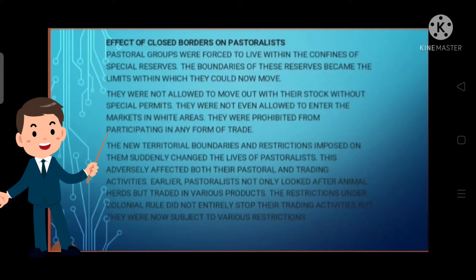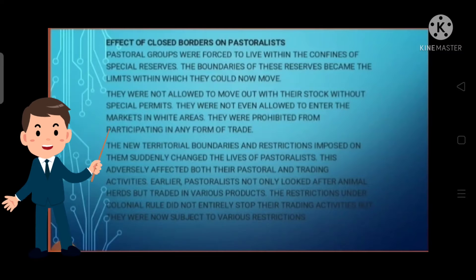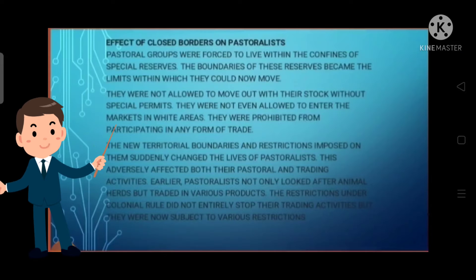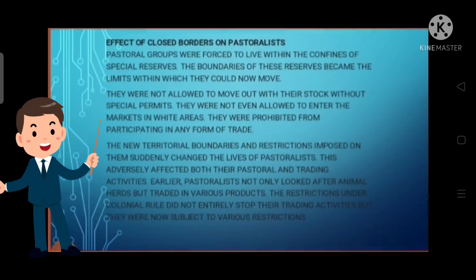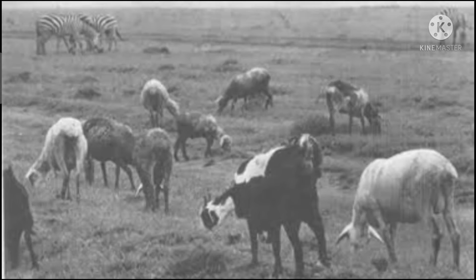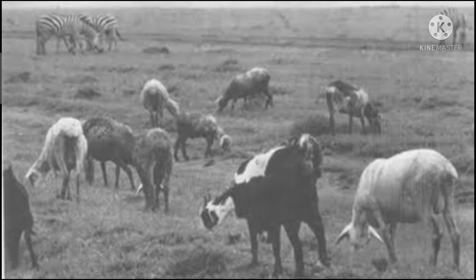From the late 19th century, the colonial government began imposing various restrictions on the mobility of pastoralist nomads. The pastoralists were forced to live within the confines of designated space reserves — they were forced to live within a fixed area. The boundaries of these reserves became a limit within which they could not move.